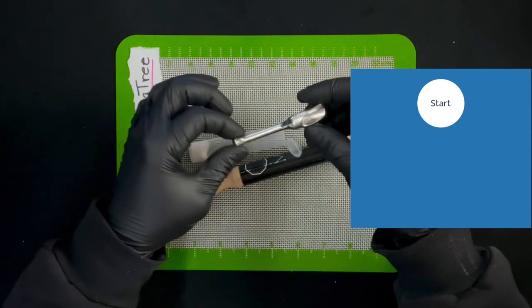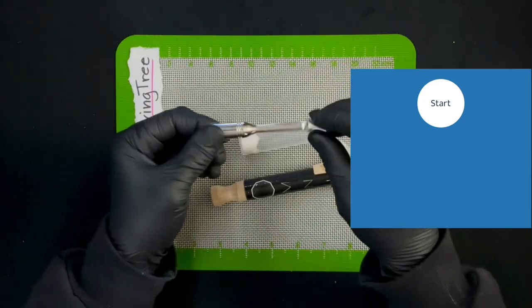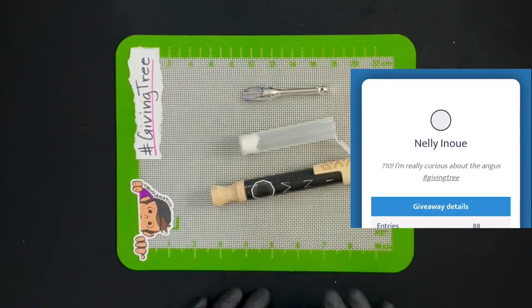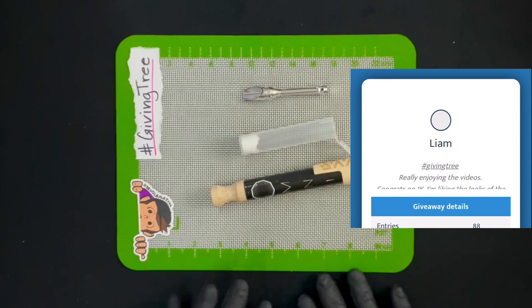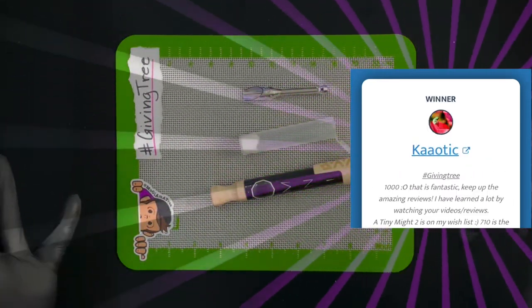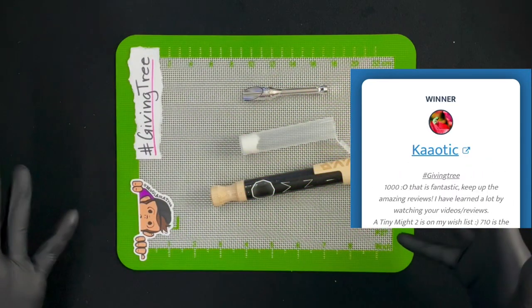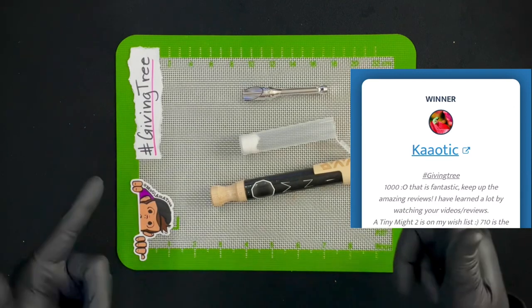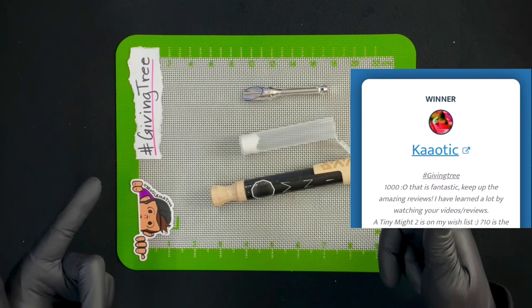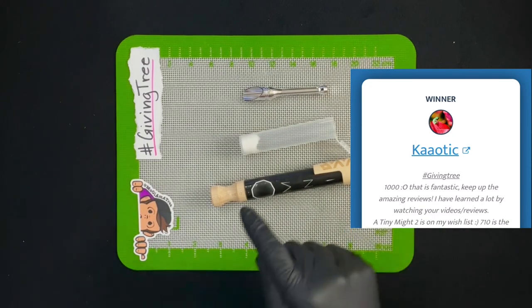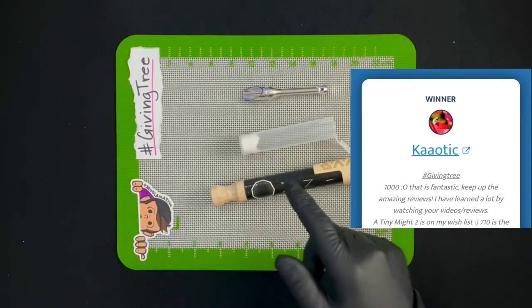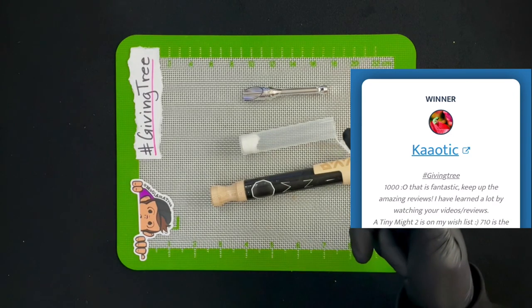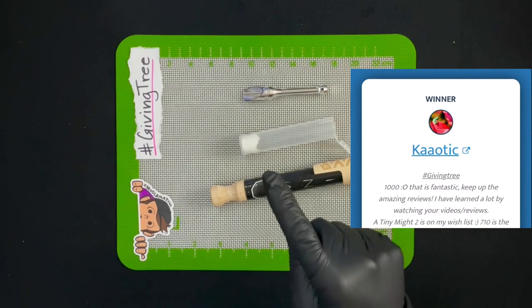Next up we have a Simrell Scoopy Scoop, ooh shiny, made out of machined aluminum, super lightweight. Let's hit start, drumroll please. Chaotic! Chaotic says 1000, that is fantastic. Keep up the amazing reviews. I have learned a lot watching your videos and reviews. Wow man, thank you so much, that means a lot. It's comments like that that really keep me going and make these videos fun for me to make.